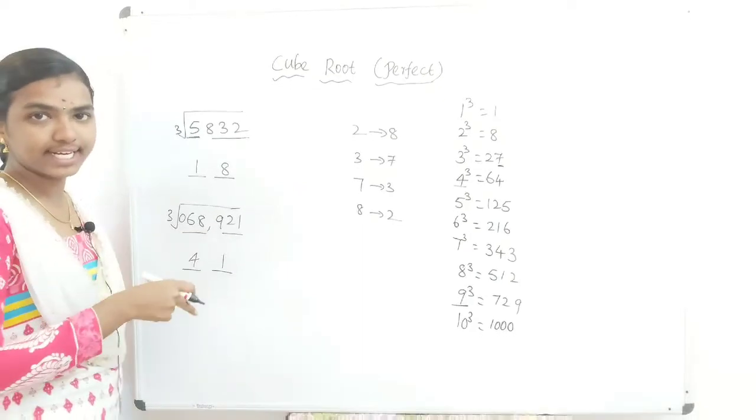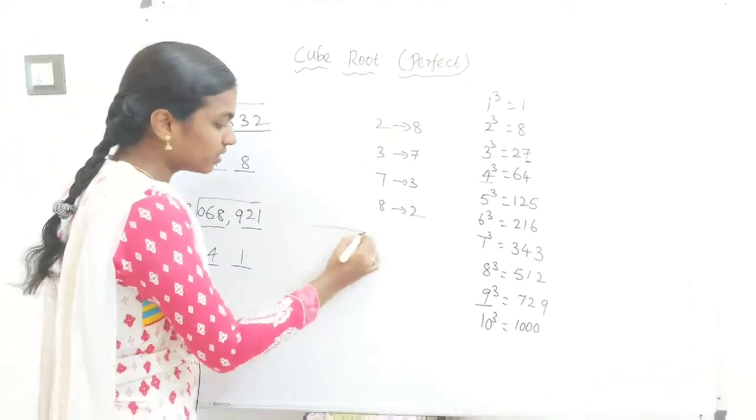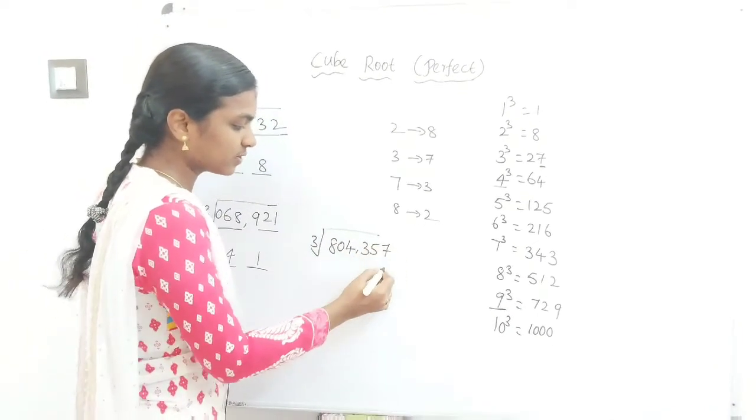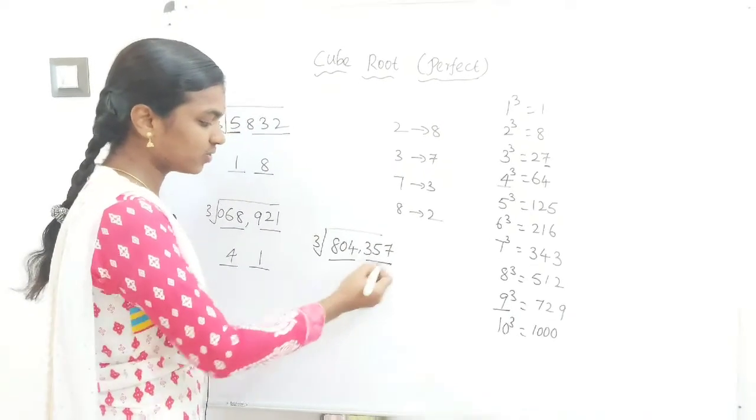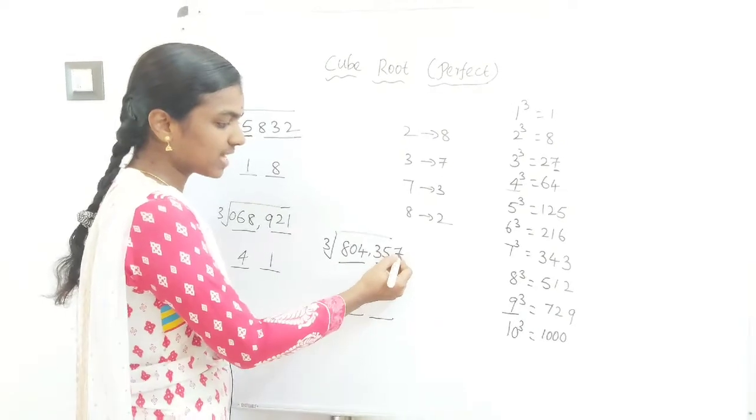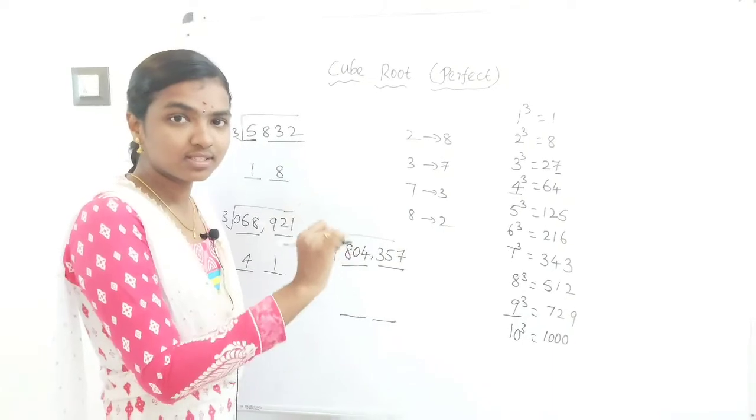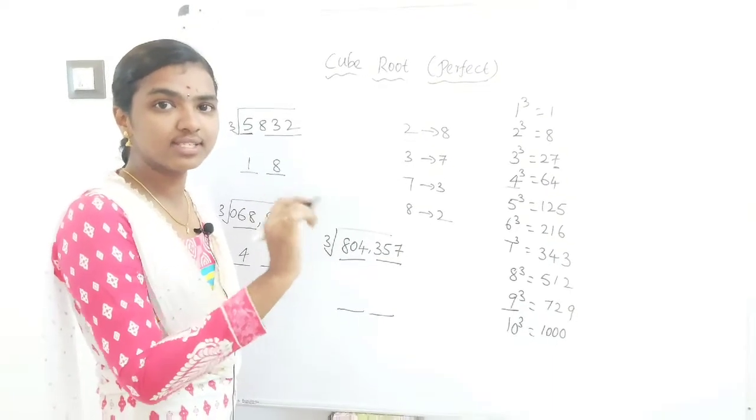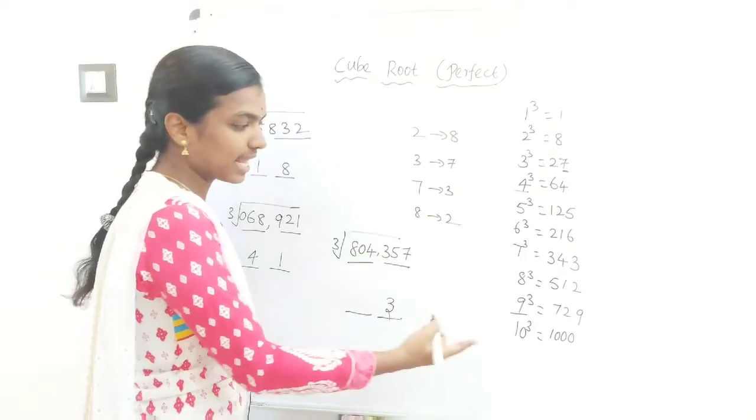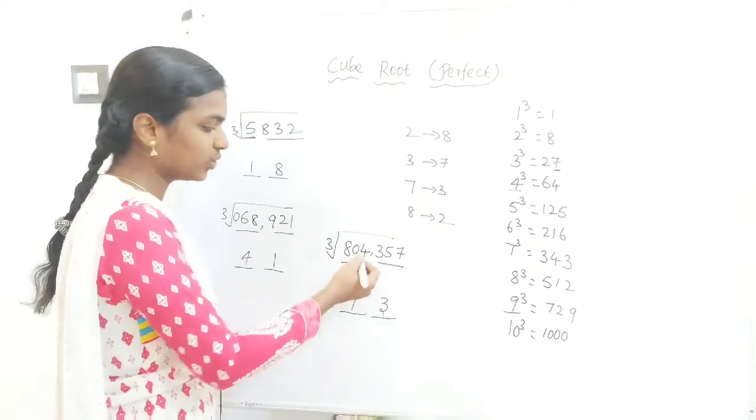For the 6-digit number, cube root of 804357. Split 3 digits from right. Our answer will be 2 digits. Last digit 7 means which cube number has last digit 7? It's 3 only. Now 804 lies between 729 and 1000, so take the lowest cube 9. The answer is 93.